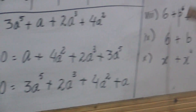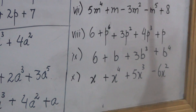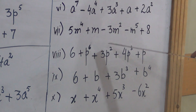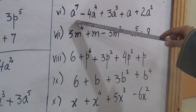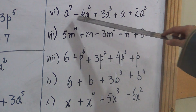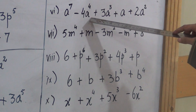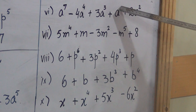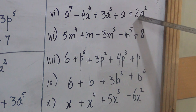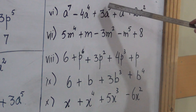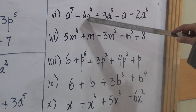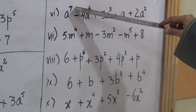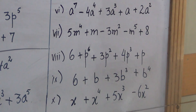These are the questions you have to solve by yourself — this is your homework. Note down these expressions and solve them. For the terms with minus signs, let me show once: this will be arranged by the power of a. The powers are 7, 4, 3, 1, and 2. In ascending order: a, then plus 2a squared, then plus 3a cubed, then minus 4a raised to the power 4, then plus a raised to the power 7. Solve all the remaining questions in the same way.